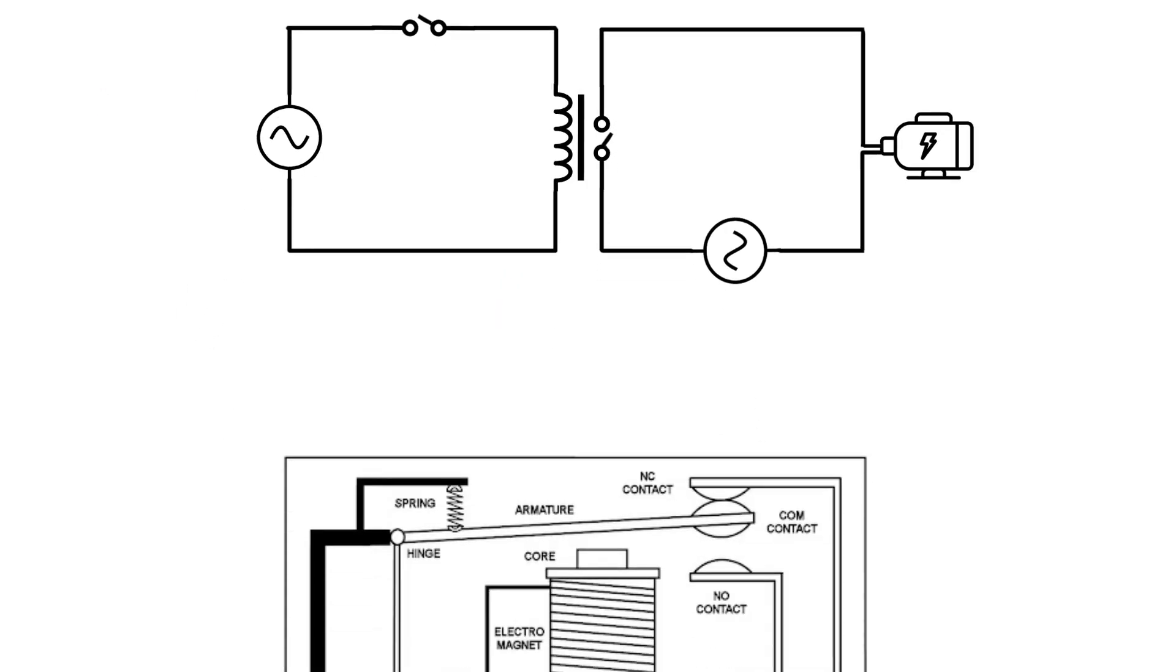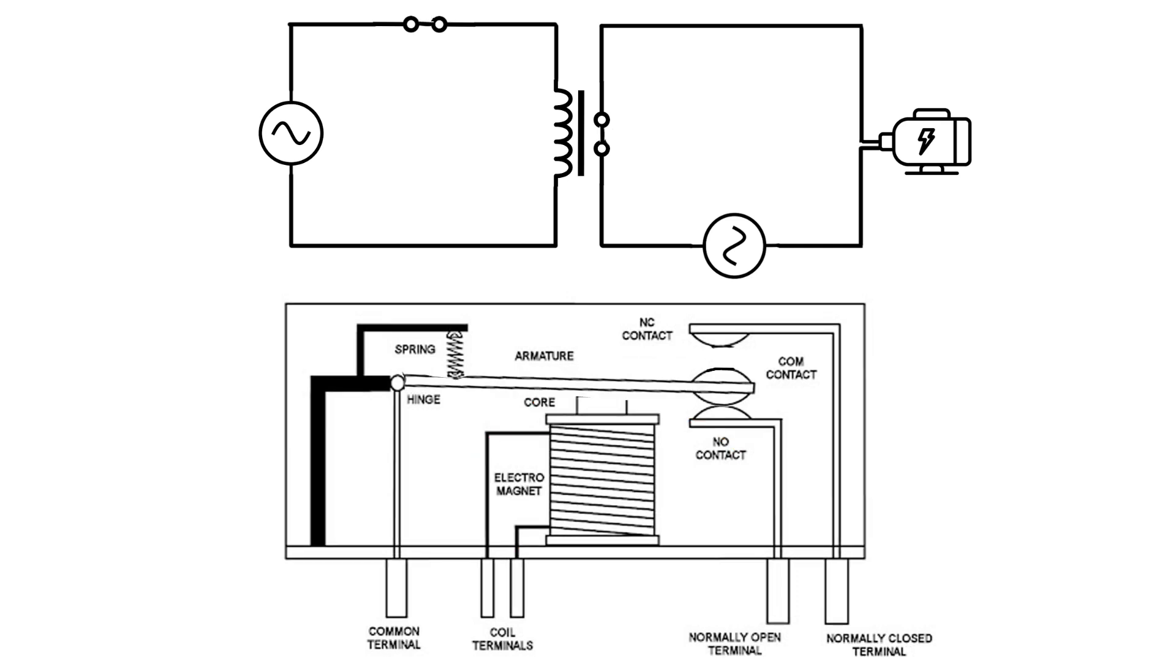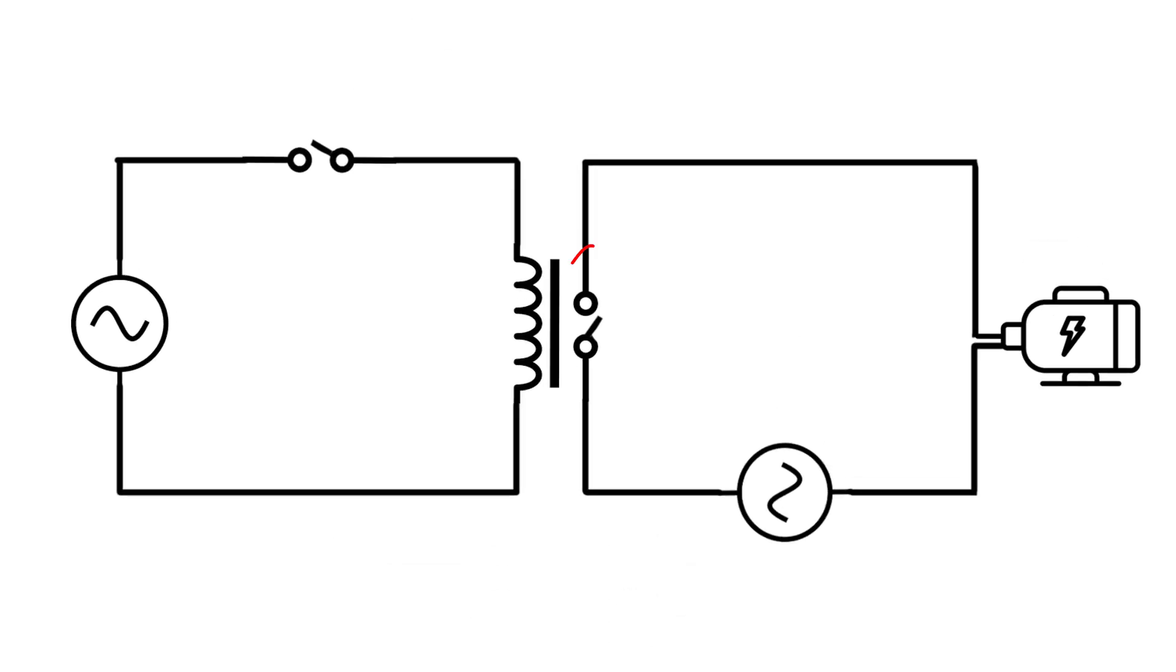A relay is made up of a coil which receives an electric signal and converts it to a mechanical action that opens and closes the circuit. This contact, for example, is a normally open contact.